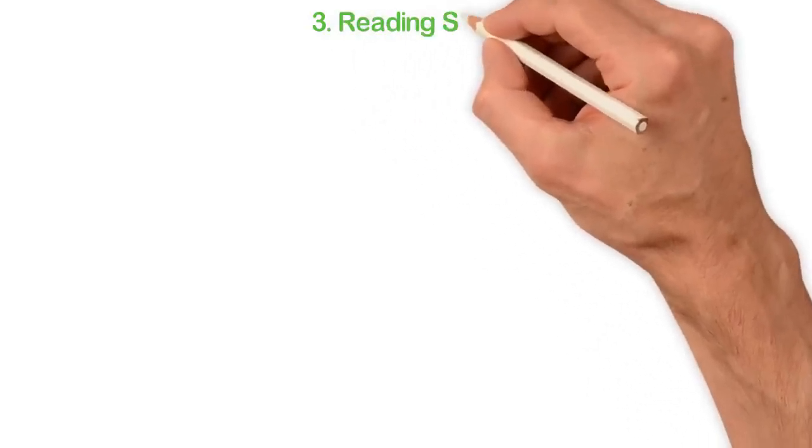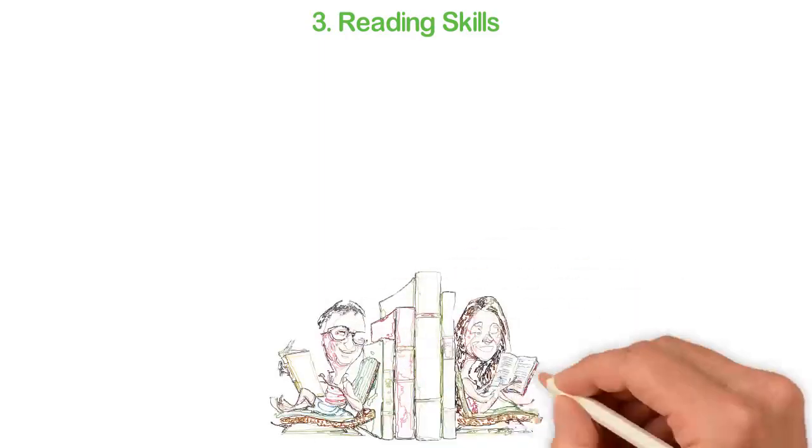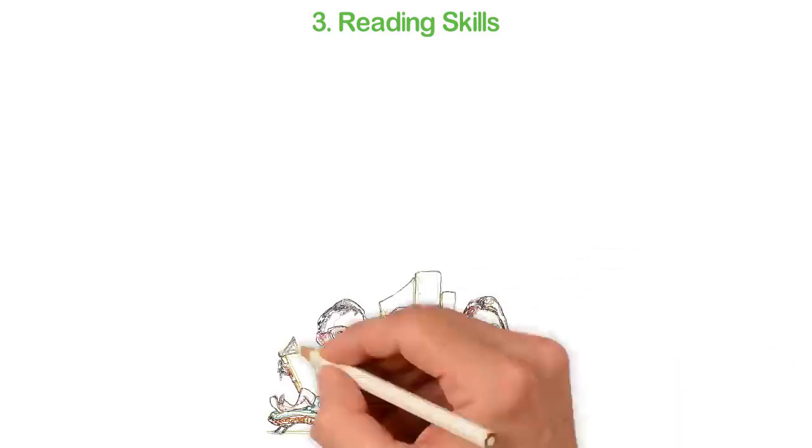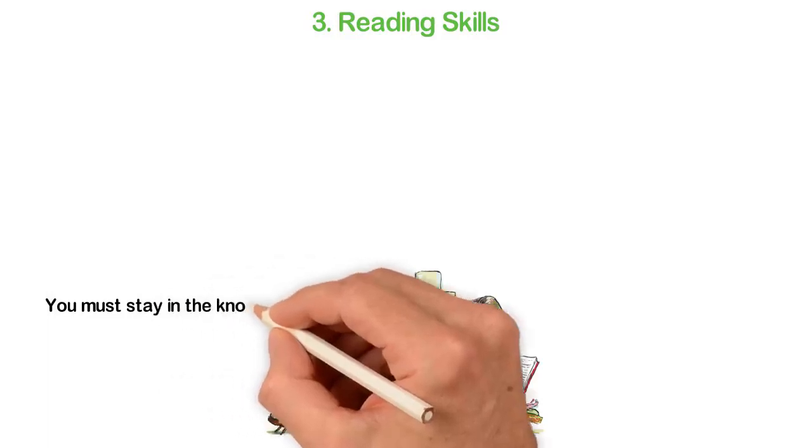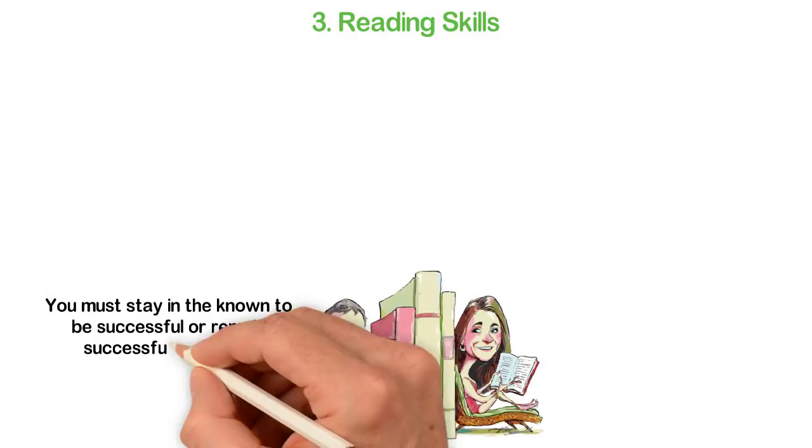3. Reading Skills. You should love knowledge because life changes so fast that if you don't update your knowledge base very fast, you won't be relevant. Bill Gates reads one book per week for a reason and that reason is, you must stay in the known to be successful or remain successful in this era.